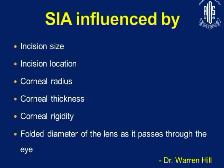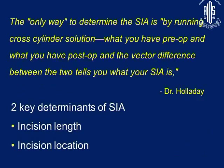SIA is influenced by incision size, incision location, corneal radius, corneal thickness, corneal rigidity, and folded diameter of length as it passes through the eye. According to ALDA, the two key determinants of SIA are incision length and incision location.